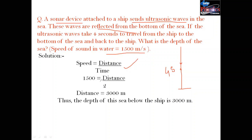To calculate the depth of the sea, we use the basic formula: speed equals distance divided by time. Speed of sound in water is 1500 m/s. Since the total time of 4 seconds covers the wave going down and coming back, we divide by 2, giving us 2 seconds as the one-way travel time. Therefore, distance equals 1500 × 2 = 3000 metres. So the depth of the sea below the ship is 3000 metres.